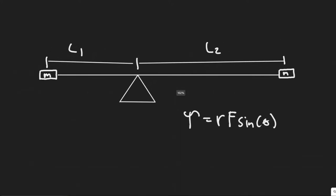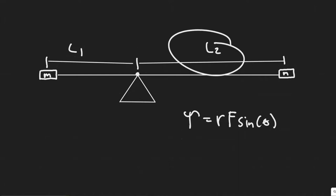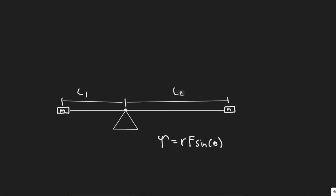What we have is this rod with two masses, and they're both going to have a mass m, and they're both going to be different distances away from this pivot point. This distance is L1 and this distance is L2. This is going to be the point of rotation, so we know it's going to rotate either this way or this way.